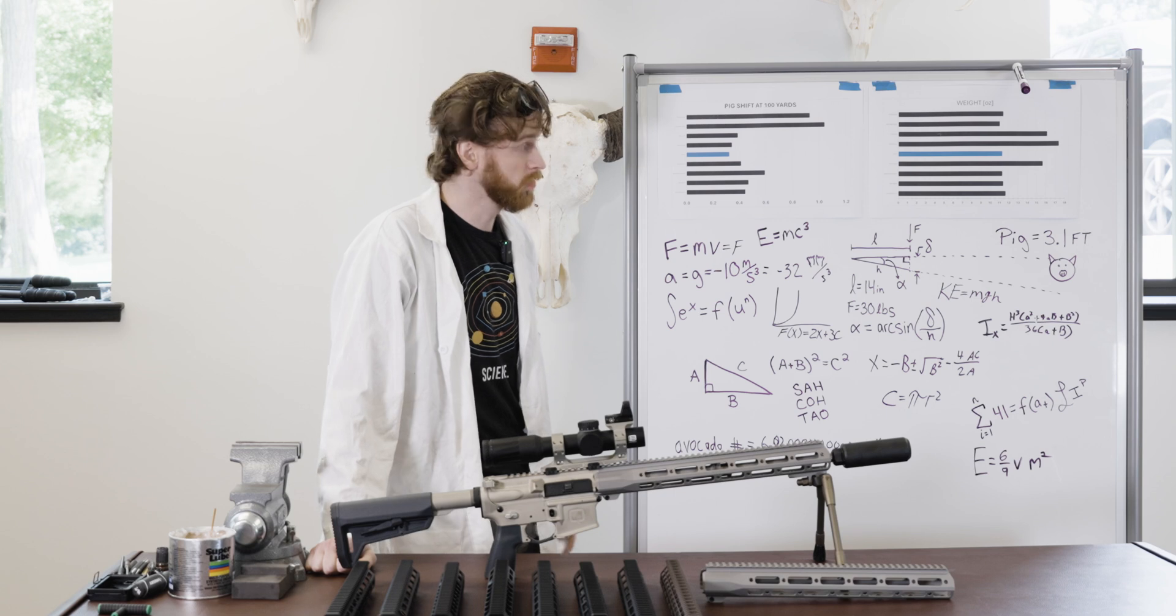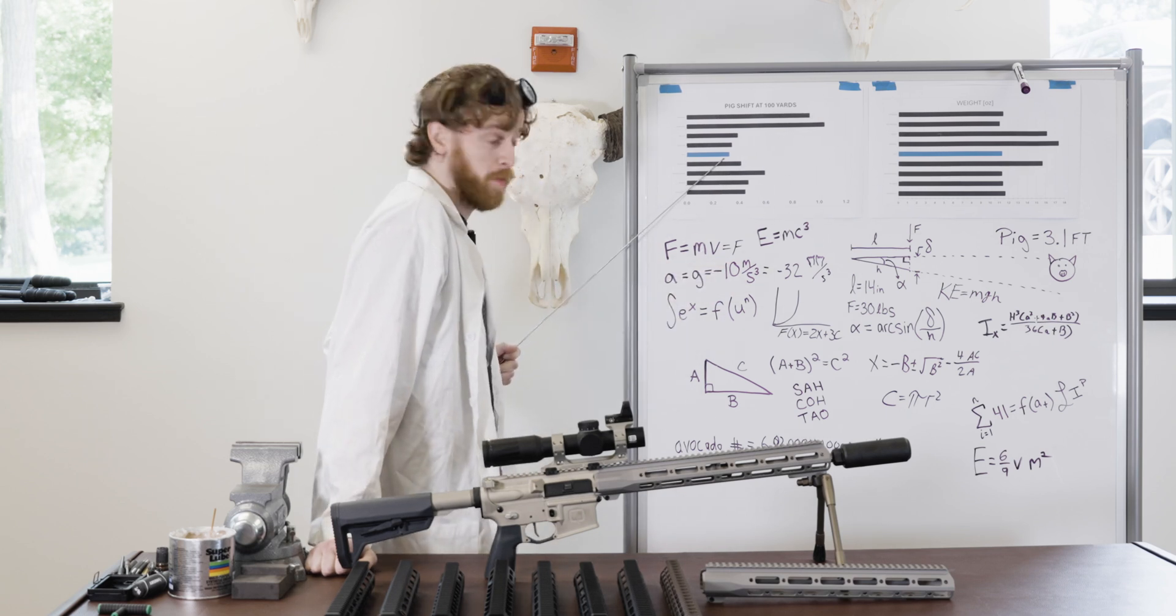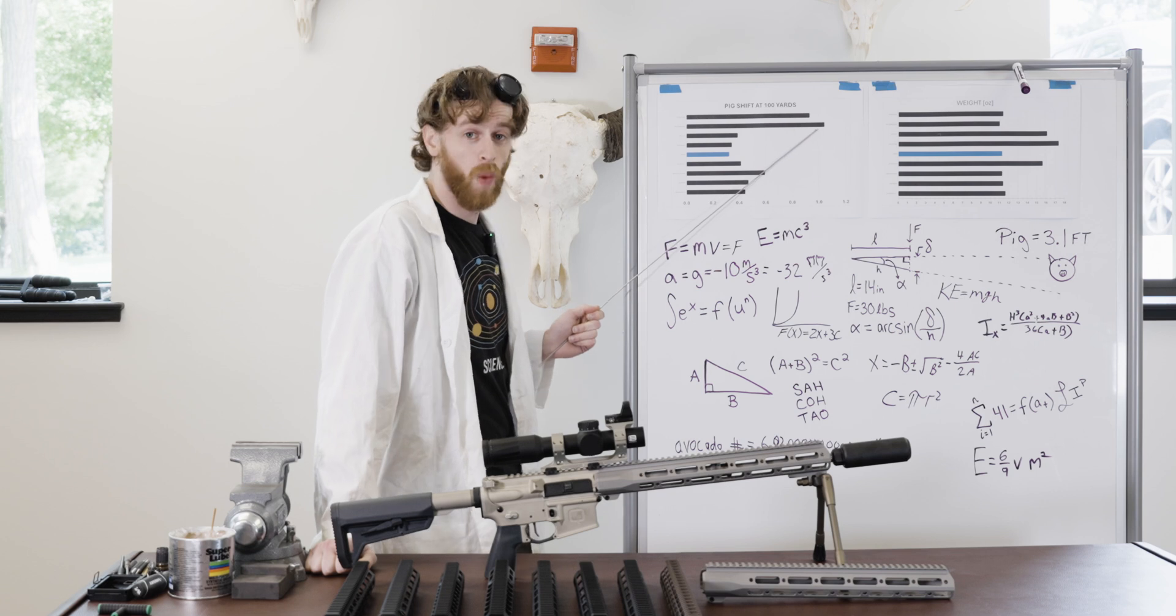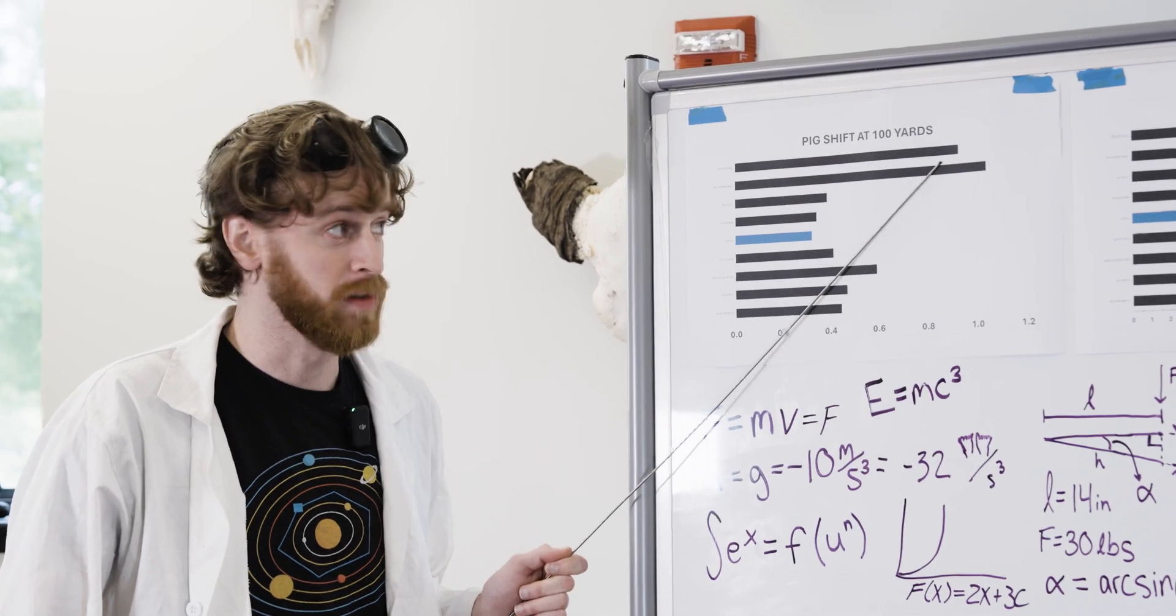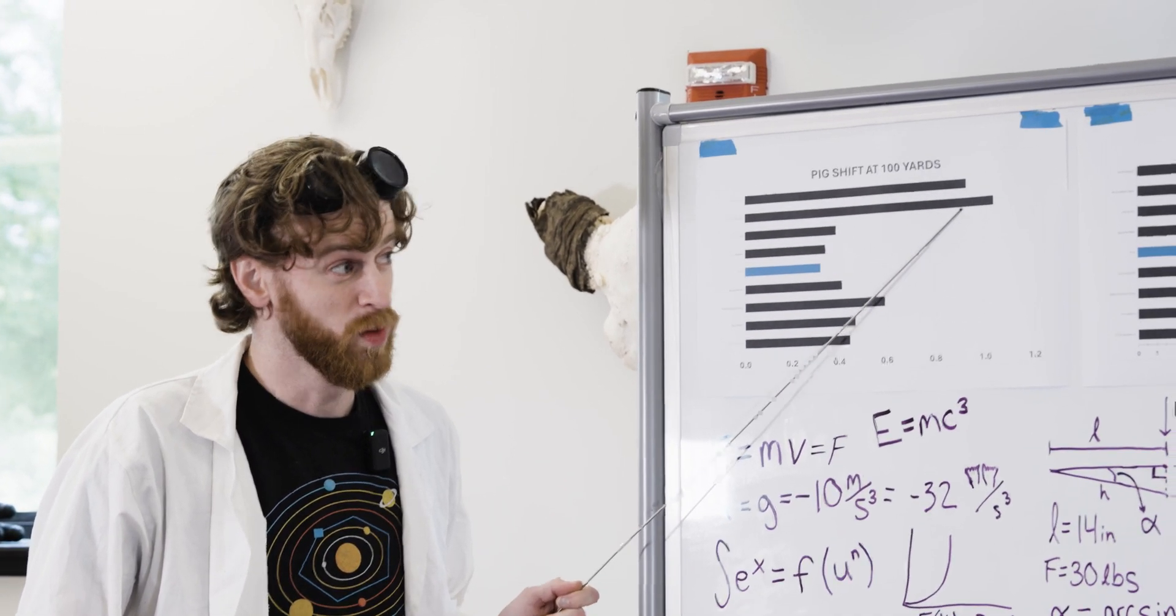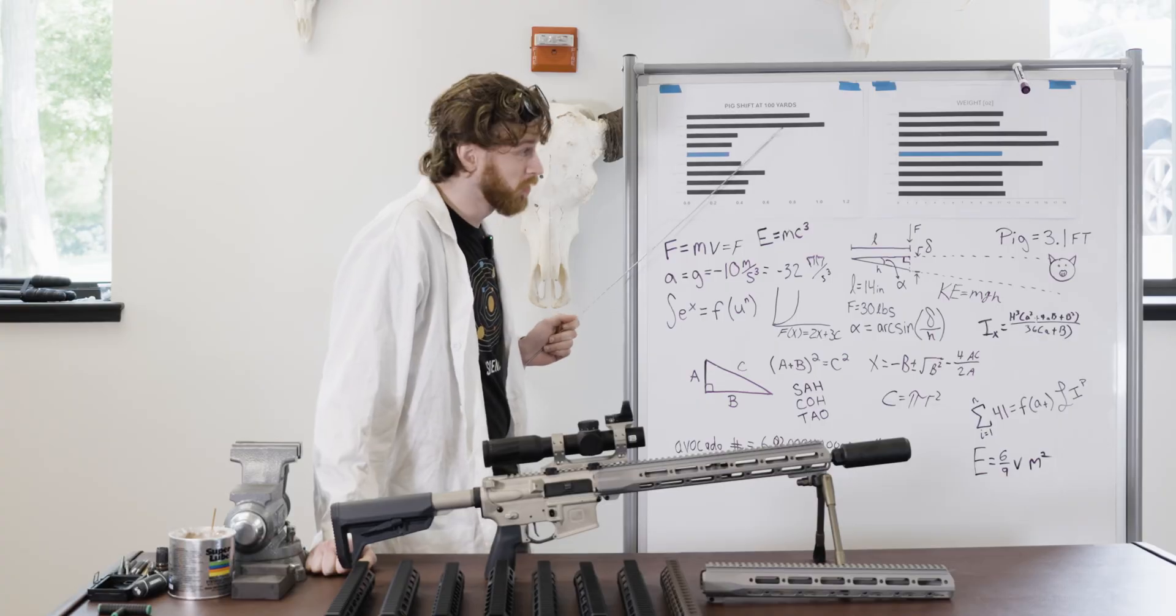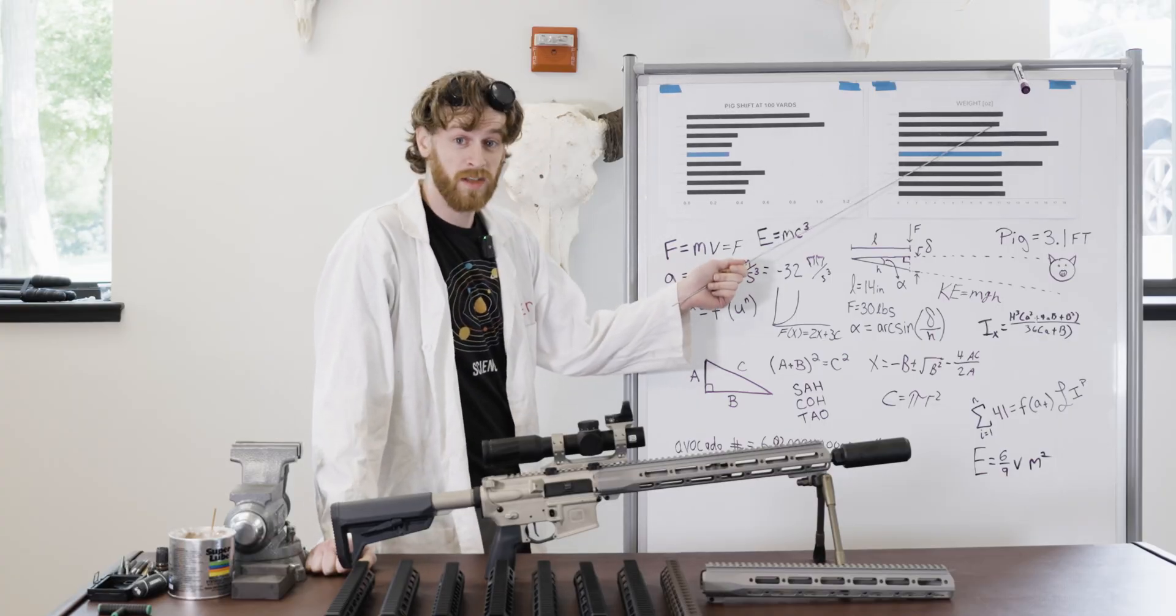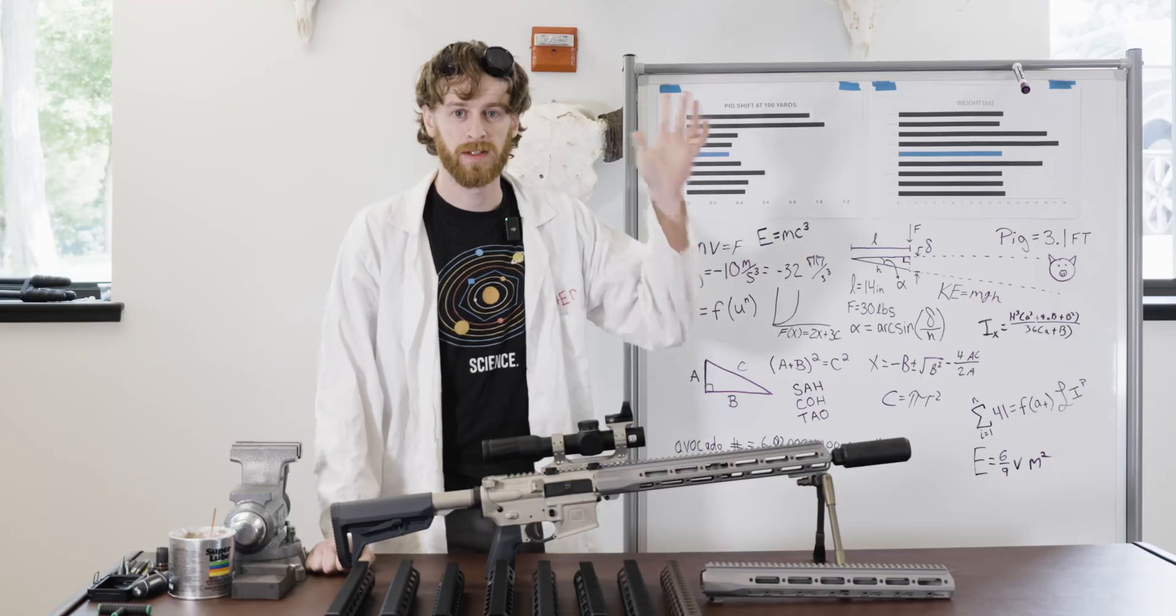Well if you want to save half the price you get triple the deflection instead of missing by a third of a pig you're now going to miss by over one whole pig height that's almost two pigs. You're not holding top of the pig you're holding center mass so you're now putting that bullet right in the dirt if you're using your laser. Is it really worth saving that money for triple the deflection for a quarter ounce of weight savings? No strength and weight both matter science.